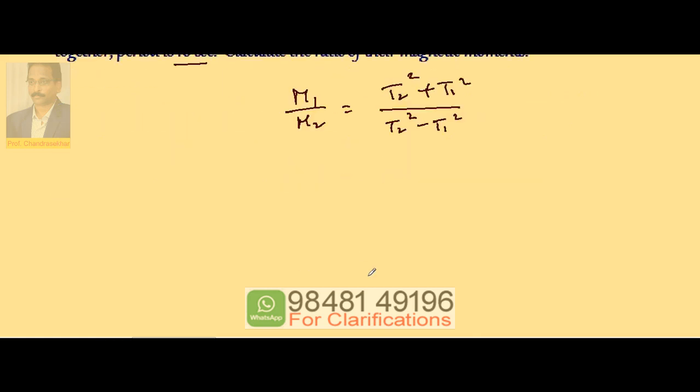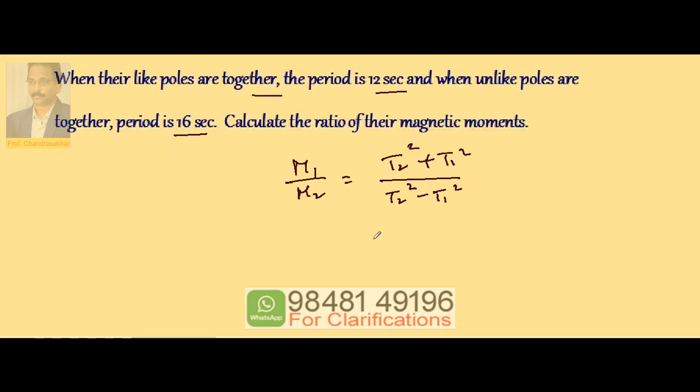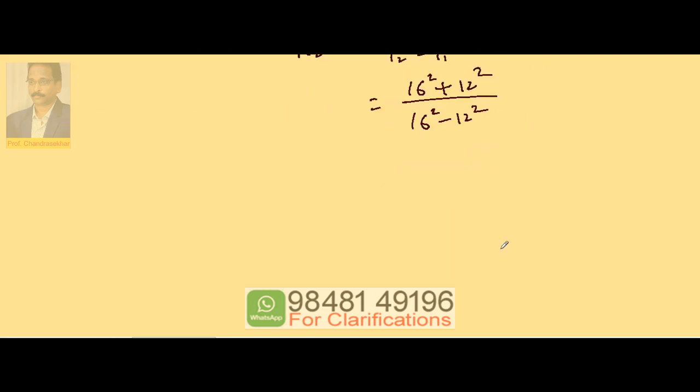M1 and M2 are the magnetic moments. So data suggests this is 16 square plus 12 square divided by 16 square minus 12 square. So 16 square is 256 plus 144.